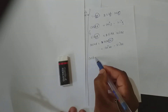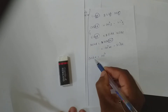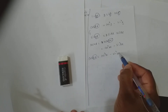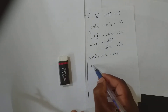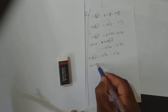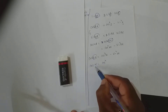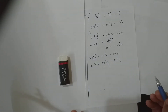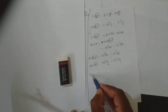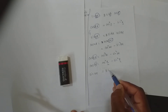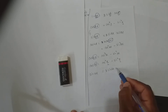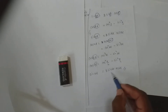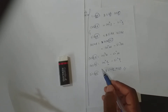If you need cos 6x, that will be cos²3x minus sin²3x. If it is cos x, here it will be cos²(x/2) minus sin²(x/2). If it is sin 10x, it is 2 sin 5x cos 5x. The angle on the right hand side will be half of the angle on the left hand side.